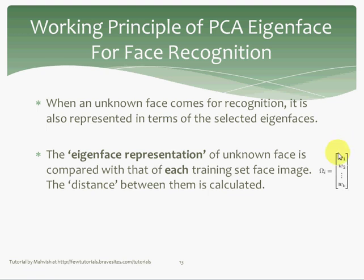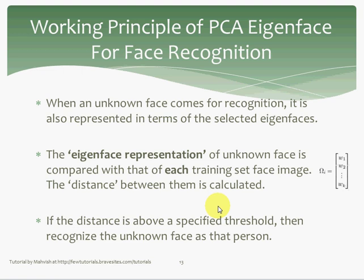The distance between the weight vector representations is calculated — not between the raw images themselves. I was confused at first about what it meant to calculate the distance between images, but that's what it means: the distance between weight vectors. If the distance is below a specified threshold, we pick the unknown face as that person. Otherwise, the default result would be unknown.